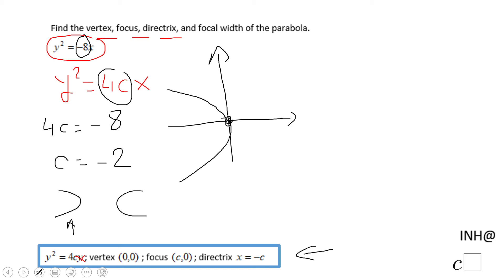And then c units inside is the focus. So if the vertex is (0,0), the focus, which is 2 units to the left, will be (-2,0).